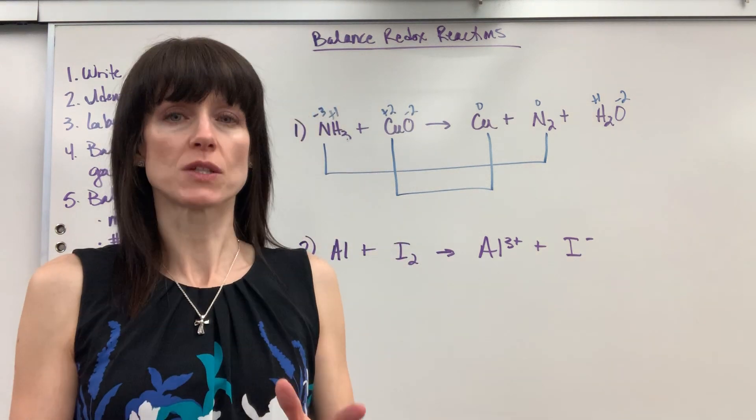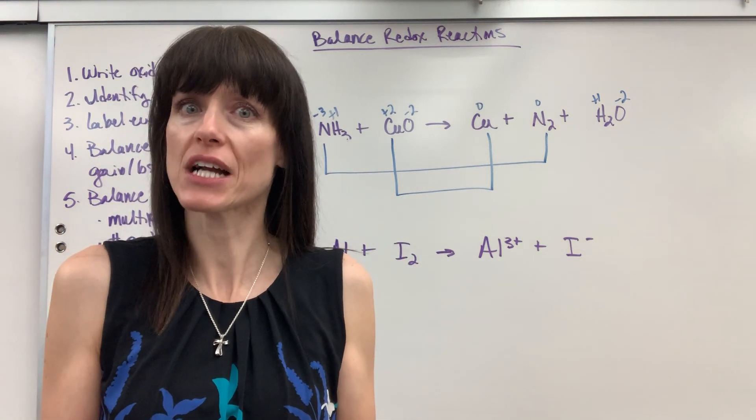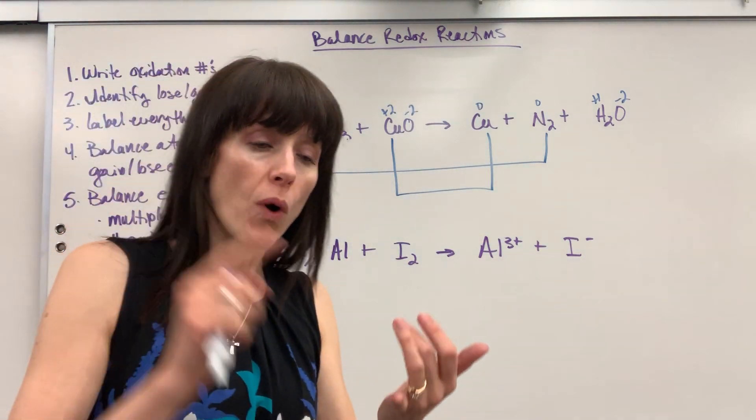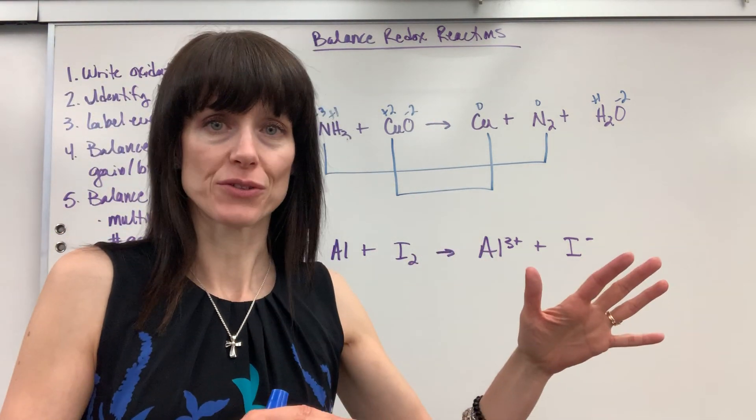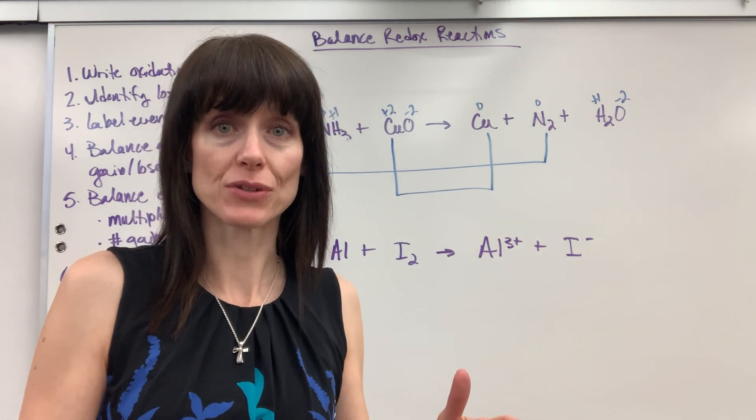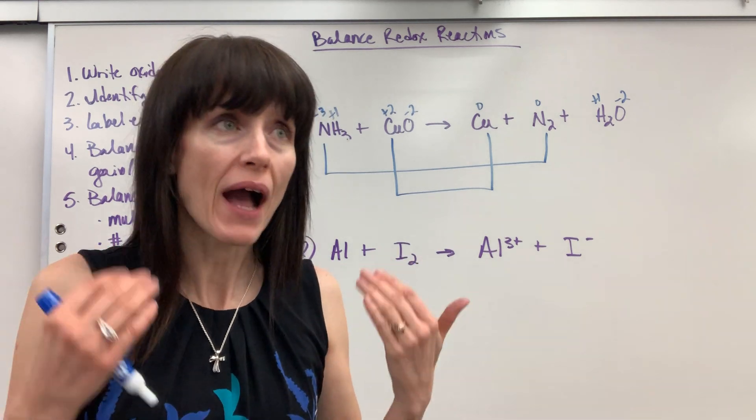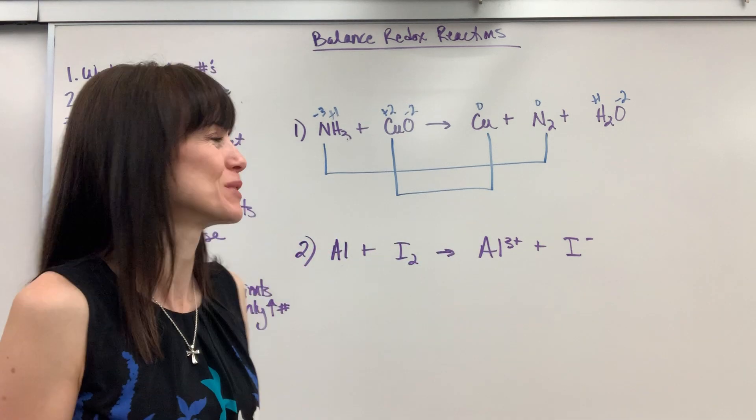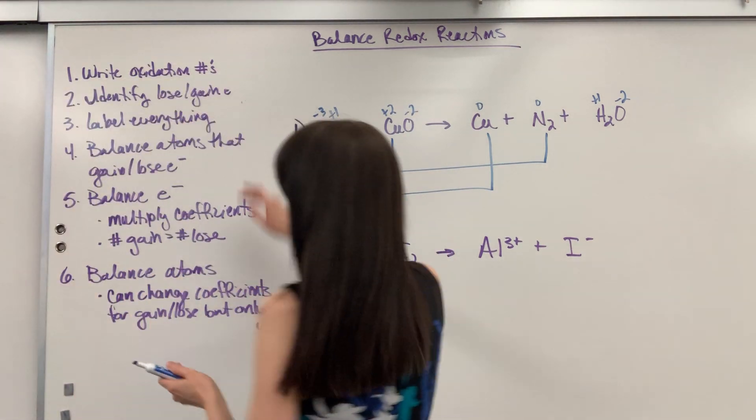Now every once in a while you'll be given a question that will say, is this a redox reaction? You will get to this point. If you can't find one atom that gains electrons and one atom that loses electrons, it's not redox. You have to have a species gain and a species lose electrons in order for it to be redox.